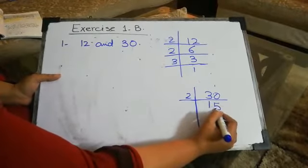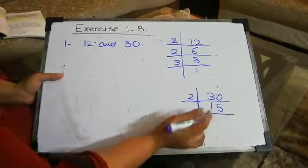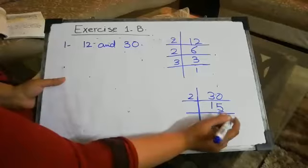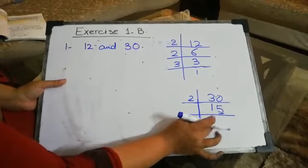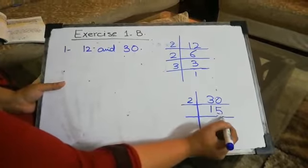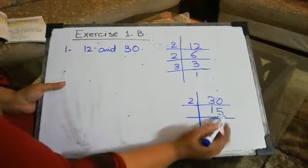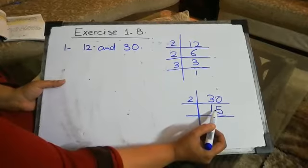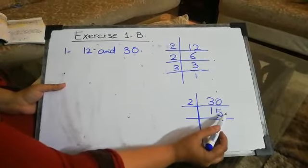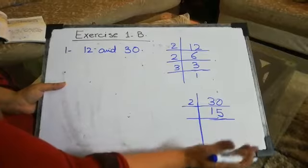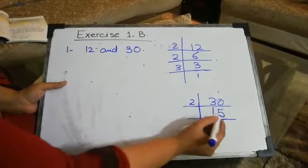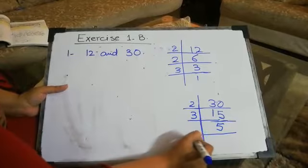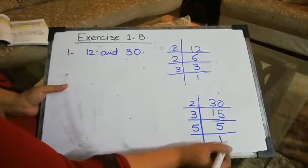Now we have 15. Since 15 is not a multiple of 2, we check the 3 times table. If you add up the digits of a number and the sum is a multiple of 3, then the whole number is a multiple of 3. For 15: 5 plus 1 equals 6, and 6 is a multiple of 3. Yes, so 15 is a multiple of 3. So 3 times 5 is 15.